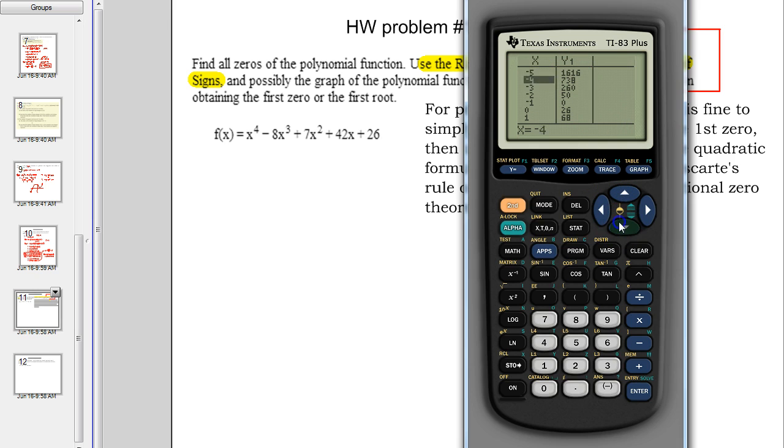If I scroll up and down, I'm not going to find any more. Negative one is my only zero. If I go to the graph, again I see it touches there. I don't see it touching anywhere else.